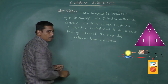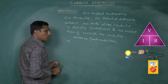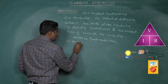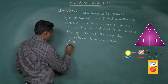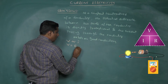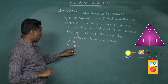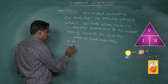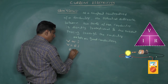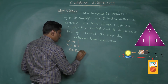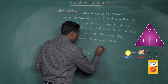The potential difference V between two points of a conductor is directly proportional to the current passing through the conductor: V is equal to R times I. Here R is the proportionality constant, also called the resistance of the conductor.